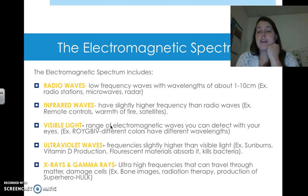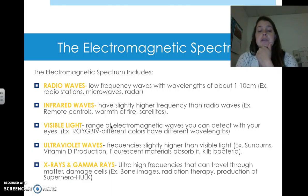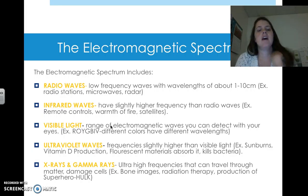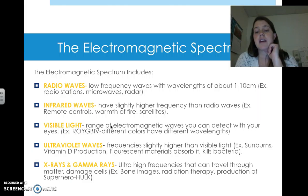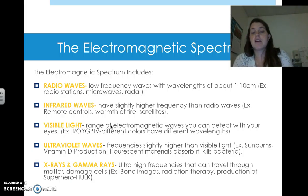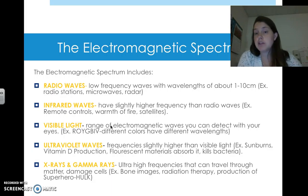Ultraviolet waves are called ultraviolet because they're higher in frequency than the violet of the visible spectrum. Sunburns are caused by ultraviolet waves. Ultraviolet waves also enable your body to produce vitamin D whenever you're in the sun — which is a good thing, since vitamin D is very important for survival and the main way to get it is through sun exposure. Fluorescent materials absorb ultraviolet rays, and UV rays are also good for killing bacteria, so we often sterilize things using them.